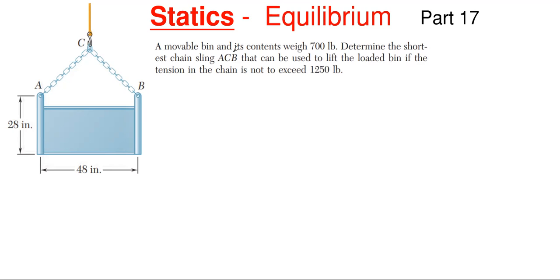We have a movable bin and its contents weigh 700 pounds. We need to determine the shortest chain length ACB that can be used to lift the loaded bin if the tension in the chain is not to exceed 1250 pounds.